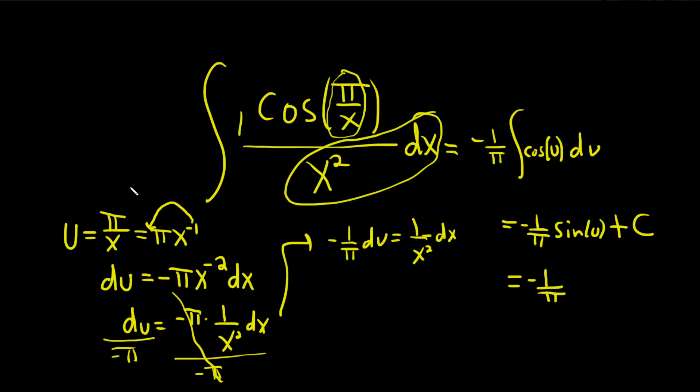So this is equal to negative 1 over pi. And then the sine of u, well, u is just pi over x. So this is the sine of pi over x. And then we have our plus c right there. Beautiful stuff. And that would be the final answer. I hope this video has been helpful. Good luck.